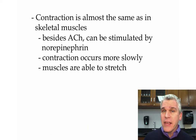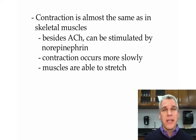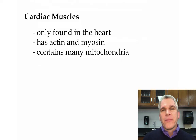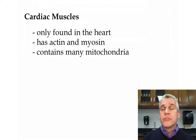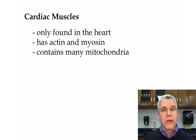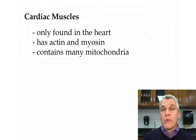Smooth muscles don't tear like skeletal muscles do when overstretched. The last type of muscle tissue is cardiac muscle. As the name implies, cardio refers to the heart, so we only find this in the heart. It is also made up of actin and myosin, and it is loaded with mitochondria. Mitochondria, of course, is where the energy is going to come from to keep those muscles contracting.